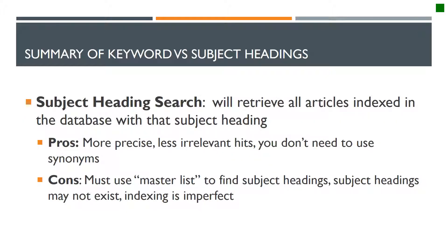Subject heading searching will retrieve all articles indexed in the database with that subject heading. The pros are it's more precise, you're going to get fewer irrelevant results, and you don't need to use synonyms. The cons are that you have to use the master list to find the subject headings, and your subject headings may not exist for all concepts — in that case, you will have to use keywords.